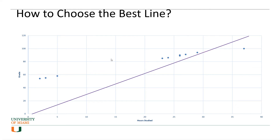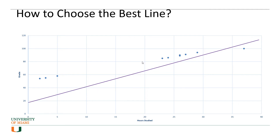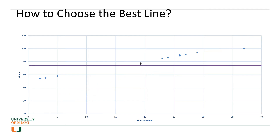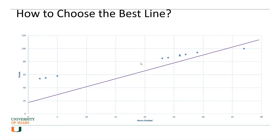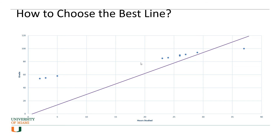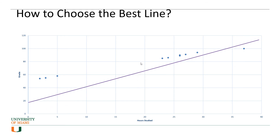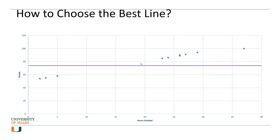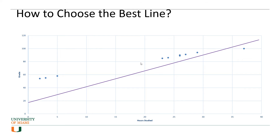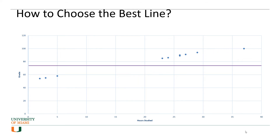But the question is: how do you choose the best line? There are many other lines you could fit through these points. What is the criterion for choosing the best line, and how would you know the line you've drawn is the best possible one? An OLS or linear regression algorithm is basically trying to answer that question.